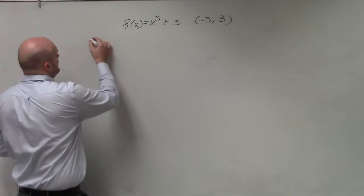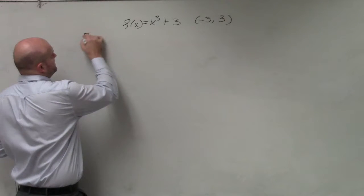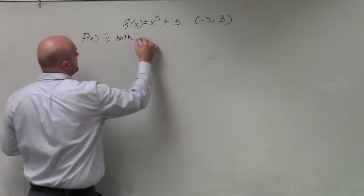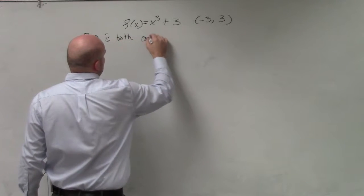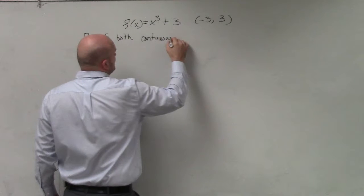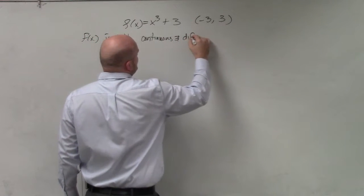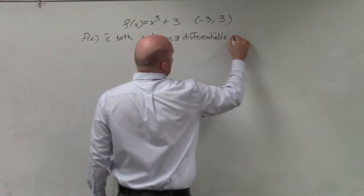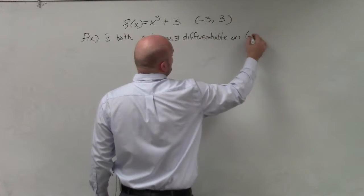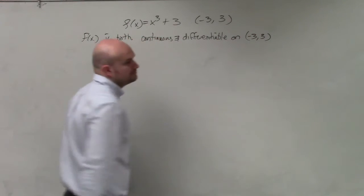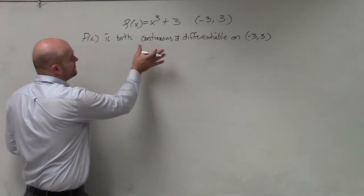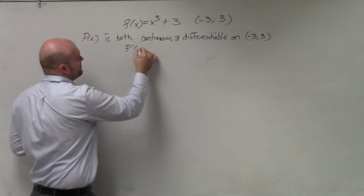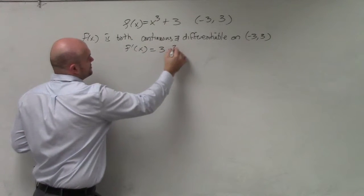So on this one, I will first state that f of x is both continuous and differentiable on the interval negative 3, 3. So I know it's differentiable and continuous. I'll go ahead and find my f prime of x, which is 3x squared.